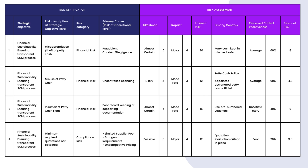Returning to our risk register — for risk 1, misappropriation or theft of petty cash, without any controls in place we can assume the likelihood of this occurring is almost certain, as employees will take advantage and steal the petty cash. Because petty cash is usually a small amount, one would expect the impact to be low or moderate. However, imagine a unit constantly reporting the loss of petty cash and requesting replenishment every week due to theft. In the long term, this will have a damaging effect on cash flow, so the impact should at least be major, if not critical. This gives us an inherent risk rating of 20.